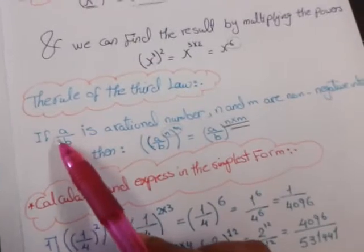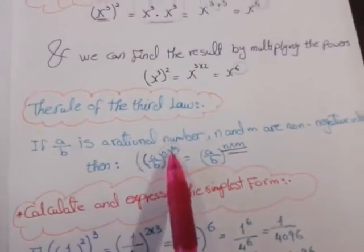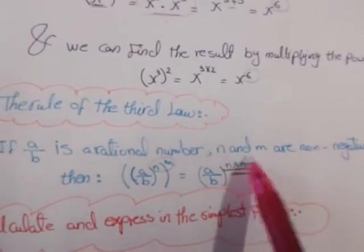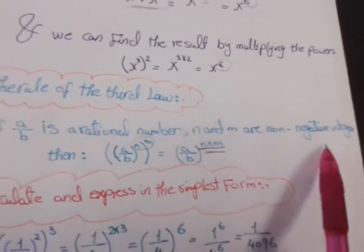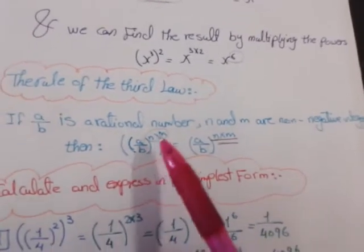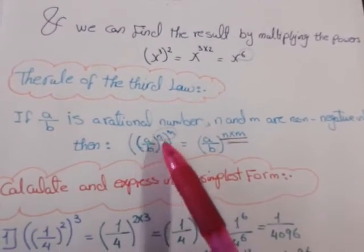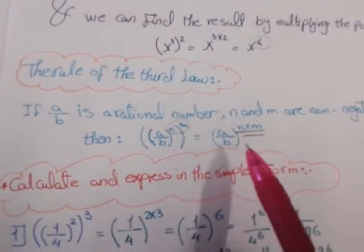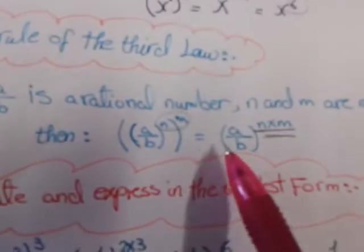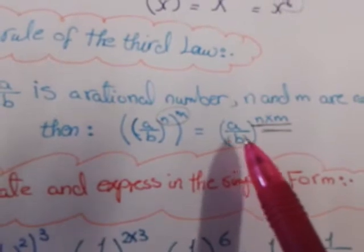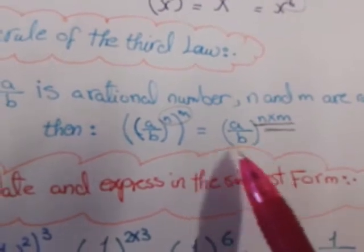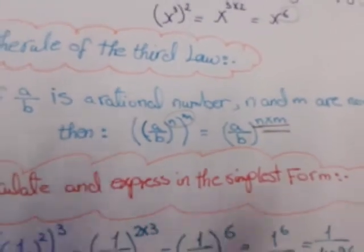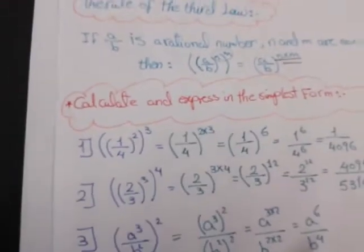If a over B is a rational number and M and N are non-negative integers, then a over B power N, all to the power M, equals a over B to the power N times M.